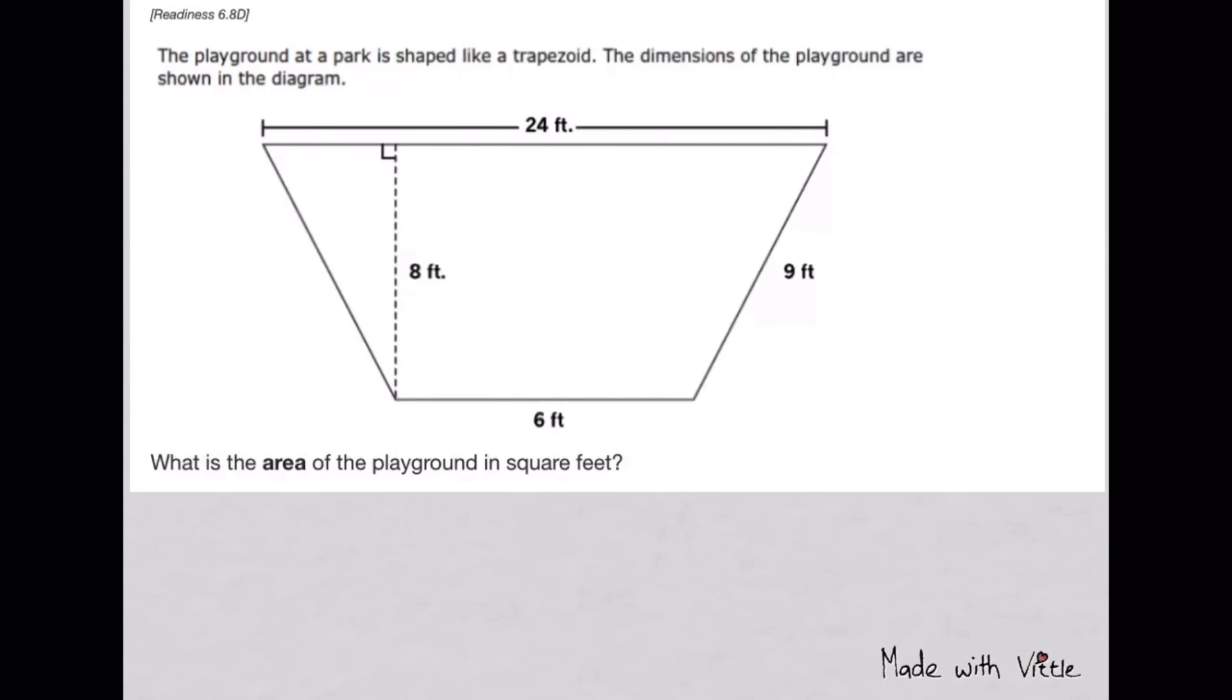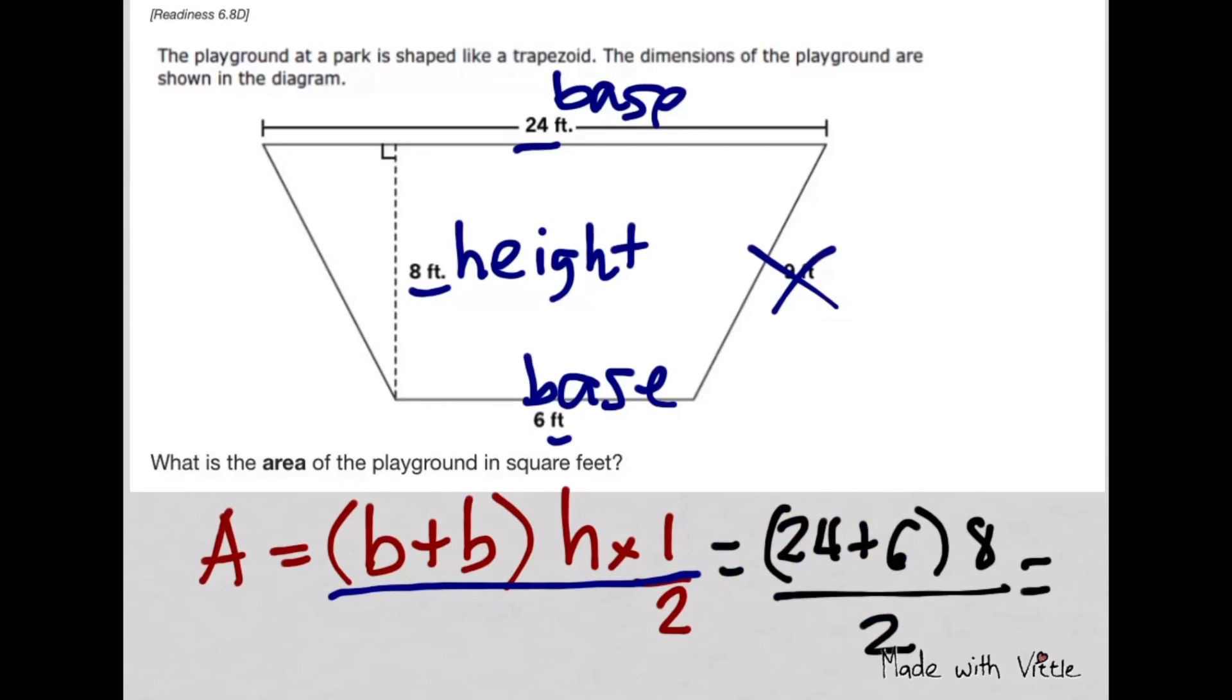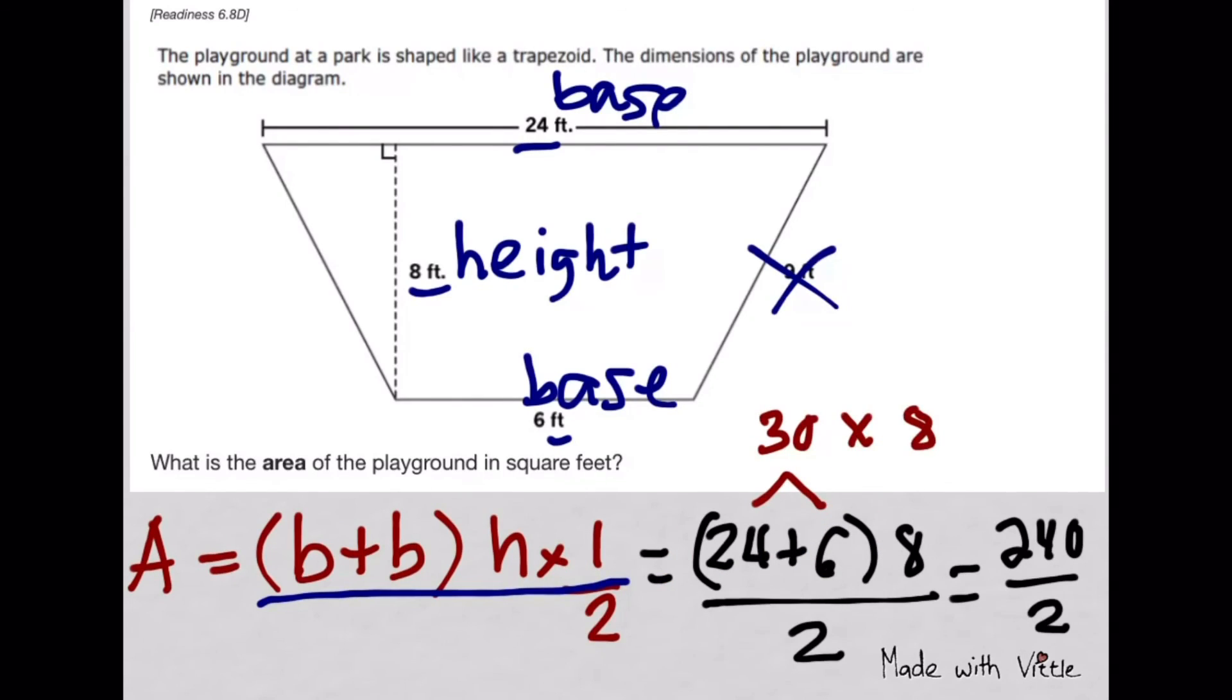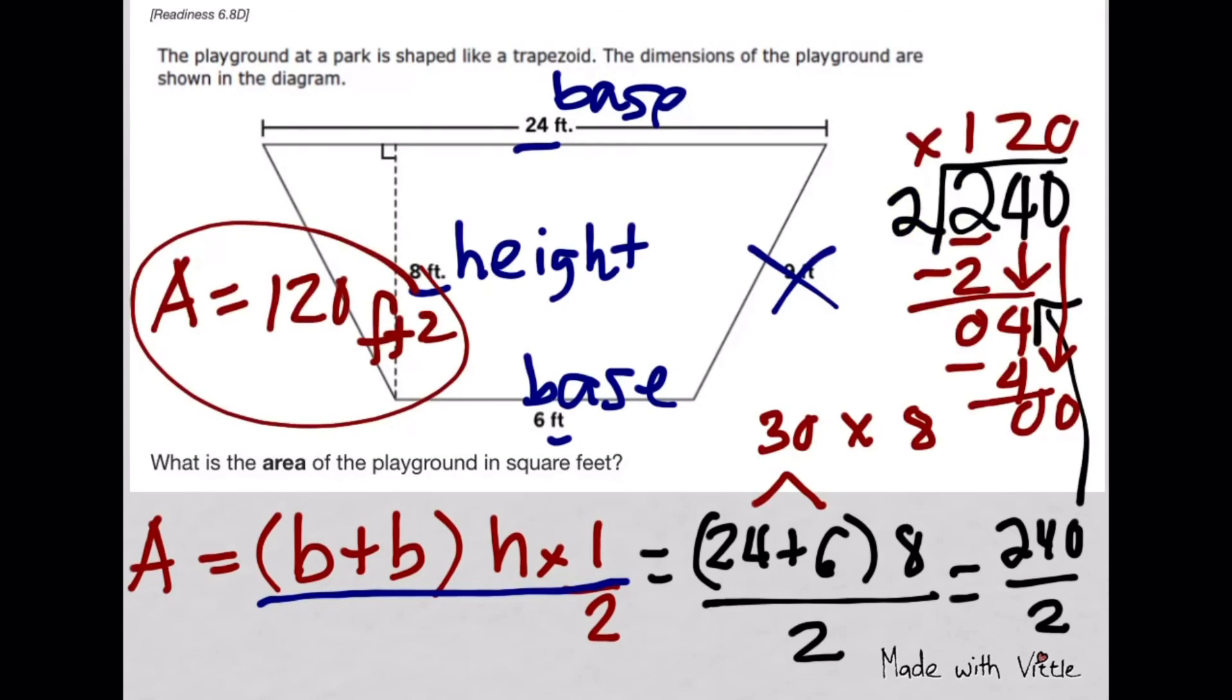The playground at a park is shaped like a trapezoid. The dimensions are shown in the diagram. What is the area of the playground in square feet? Look at your reference material guide and copy the formula for trapezoid shape. The formula is base plus base times height times 1/2. We repeatedly said in class that multiplying by 1/2 is the same thing as dividing by 2. Don't forget to divide by 2 because it's just half of a parallelogram. Therefore, the area of this trapezoid whose height is 8 and the two bases are 6 feet and 24 feet is 120 square feet. Follow the rules and formula correctly.